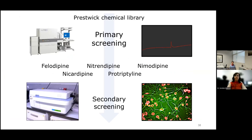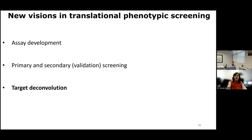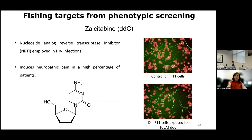To sum up, in the primary screening we identified five hits that counteracted the hyperexcitability elicited by inflammatory mediators. In the secondary screening, we confirmed the effect of two of these hits as protective against neuronal damage. The employment of phenotypic screenings should permit the performance of primary and secondary screenings and also target deconvolution assays. To validate that the model is adequate for deconvolution assays, we wanted to deconvolute the effect of the antiviral zalcitabine on differentiated F11 cells.